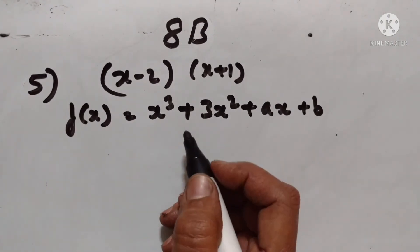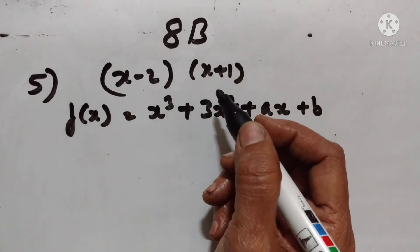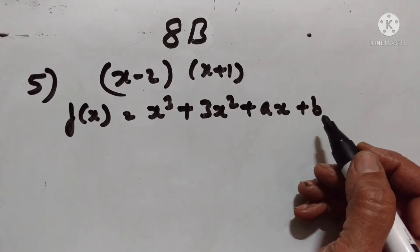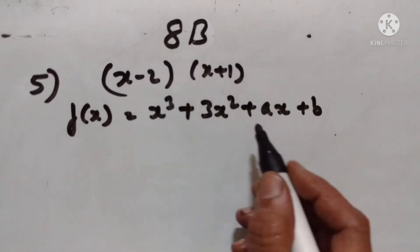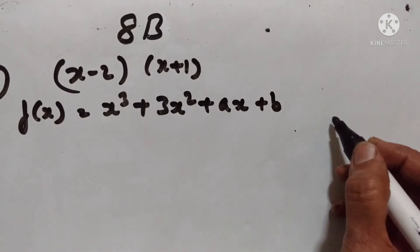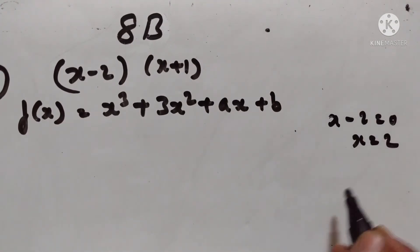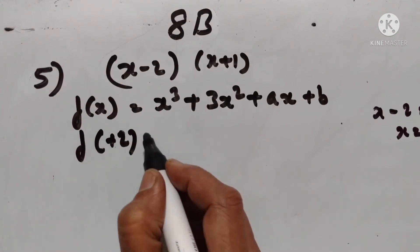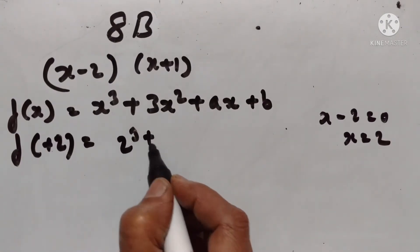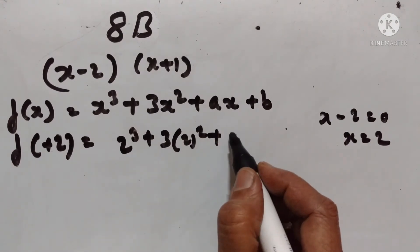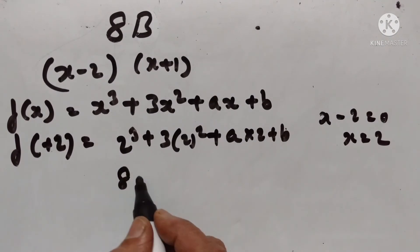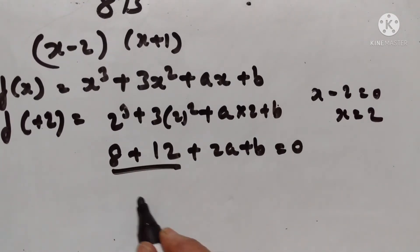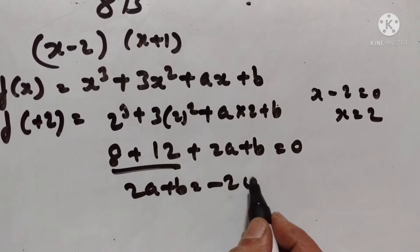Fifth problem: given that x - 2 and x + 1 are factors of f(x) = x³ + 3x² + ax + b, we have to calculate the values of a and b. Since x - 2 is a factor, x = 2 and f(2) = 0. So 2³ + 3(2²) + a(2) + b = 0, giving 8 + 12 + 2a + b = 0. Therefore, 2a + b = -20. This is the first equation.